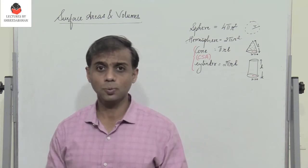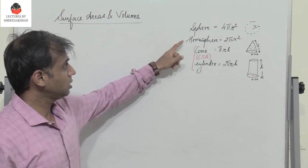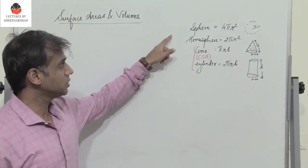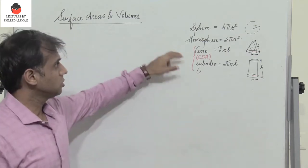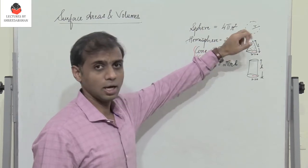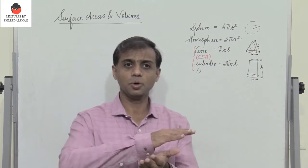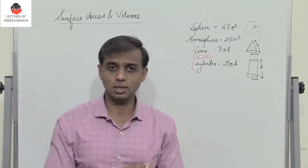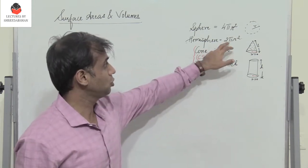To begin with, I have listed out a sphere, hemisphere, cone, and cylinder. What is the surface area of a sphere? If you imagine a ball, the surface area happens to be 4πr², where r is the radius. For the hemisphere, imagine a ball cut into 2 — the surface area, not the base, is 2πr².